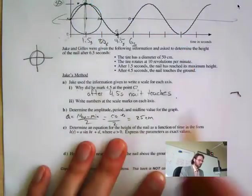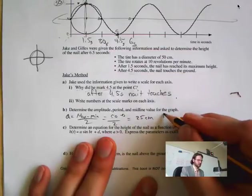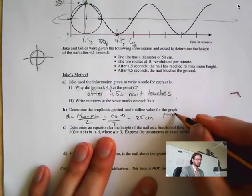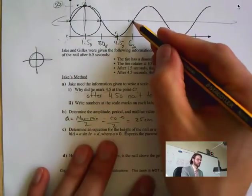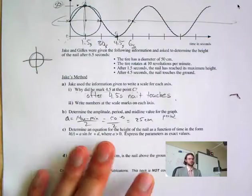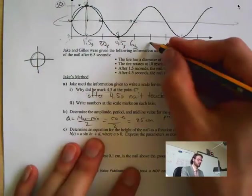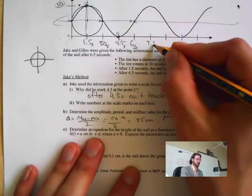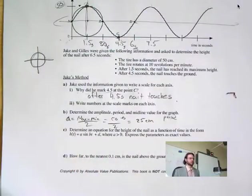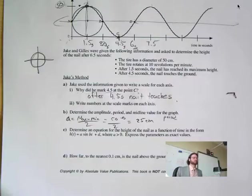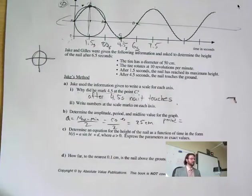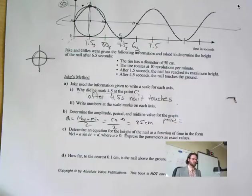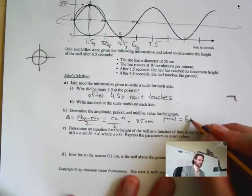Amplitude is equal to max minus min divided by 2. My max is 50, my min is 0 (it's on the ground), divided by 2, which gives me 25. Period is equal to, from here to here is one full revolution, right? 6 seconds. Or I could have thought of it this way: I have 10 rotations, 10 periods in a minute, 60 seconds in a minute. 60 divided by 10 is 6 seconds a period.